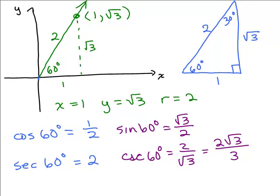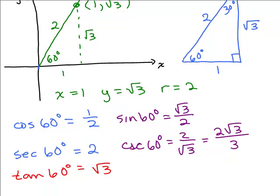How about the tangent? The tangent of 60 degrees is Y over X. So that would be square root of 3 over 1. And square root of 3 over 1 is just square roots of 3. And then the cotangent is the reciprocal, which is 1 over square roots of 3. Or if you rationalize it, square root of 3 over 3. So here's how to get the values for the cosine, the sine, the tangent, et cetera, for 60 degrees.